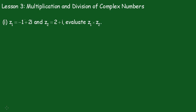Lesson 3, the multiplication and division of complex numbers. Right, now we're going to multiply these two numbers together, so we'll need to set this up. So Z1 times Z2 is equal to bracket minus 1 plus 2i times 2 plus i.